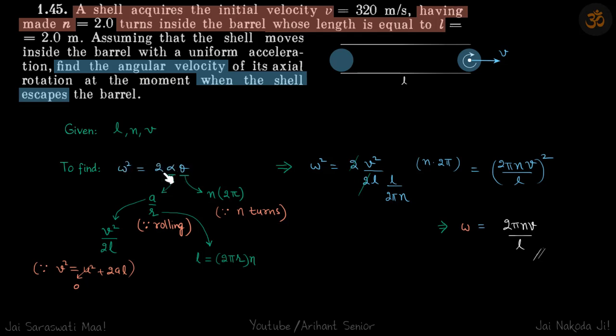So this is what we have right now and we have to get the answer in terms of L, n and v. Let's write alpha in form of the linear acceleration. So that is a by r, r is the radius of the shell. We can do that assuming that the shell is rolling.